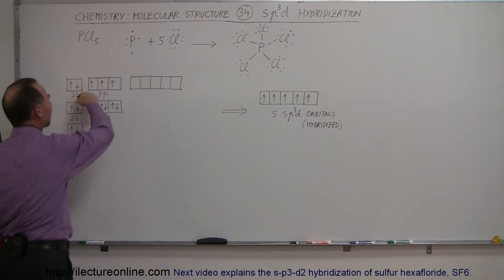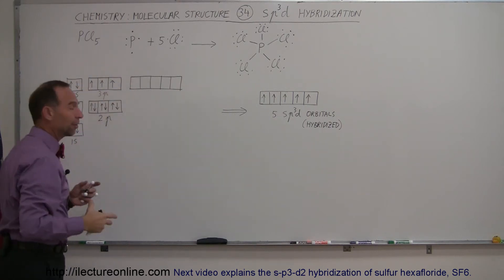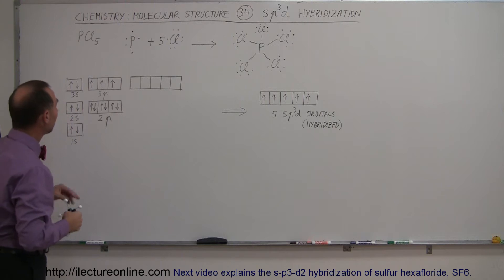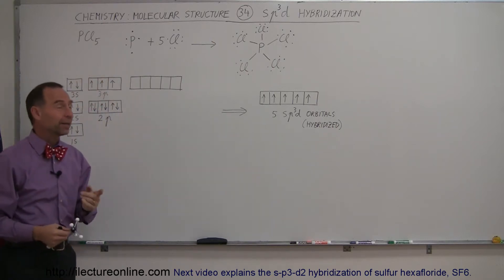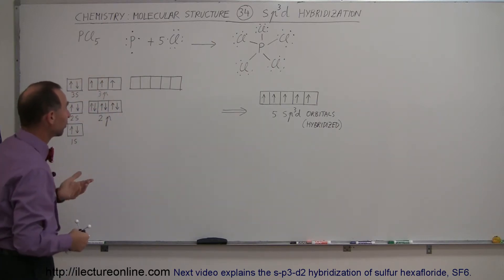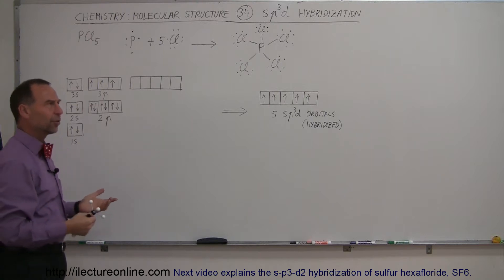Phosphorus does have five valence electrons in the outer valence band, but these two are already locked into the 3s orbital. That orbit is filled, so you would think that only these three electrons are available for bonding, but we know that phosphorus does bond with five chlorines, so how does it do that?